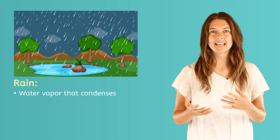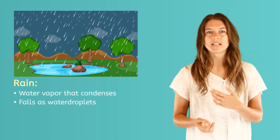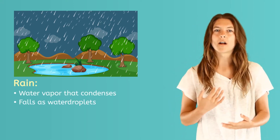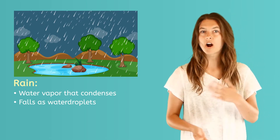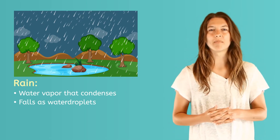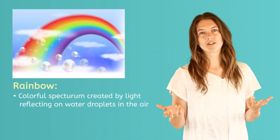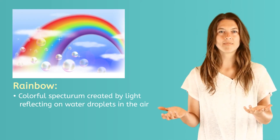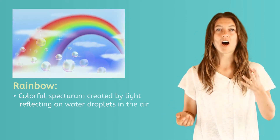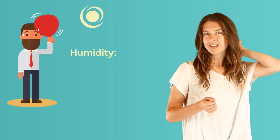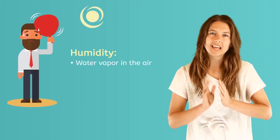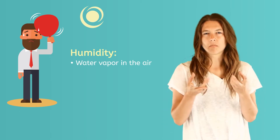Rain is water vapor from the air that condenses and falls as water droplets. It provides water for plants and animals, it helps a garden grow, and it helps fill ponds and streams. When light reflects on water droplets in the air, it creates a colorful spectrum called a rainbow. In hot weather, you might hear adults talk about humidity. Humidity is water vapor in the air, and it makes your skin feel moist.